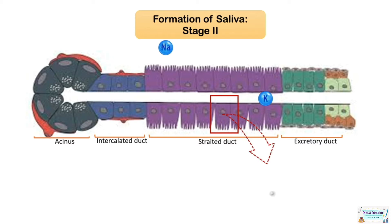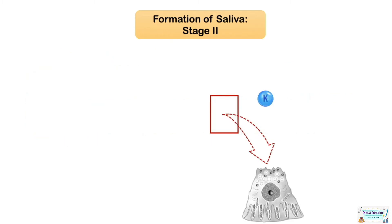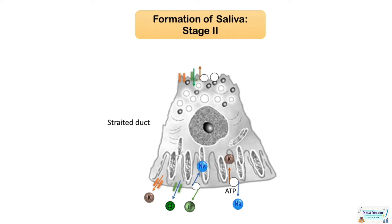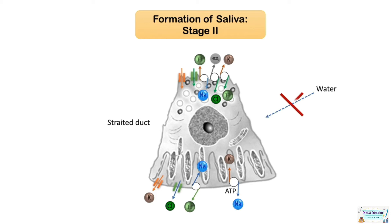Looking more closely at the striated ducts, the basolateral membrane of duct cells possesses high sodium-potassium ATPase activity, a sodium-proton exchanger, as well as chloride and potassium channels. These exchanges occur in a similar manner as seen in the acinar cells. Since water resorption does not take place here, the result is the formation of hypotonic saliva.